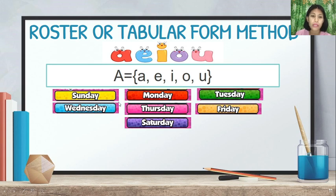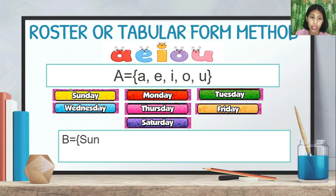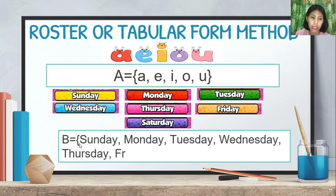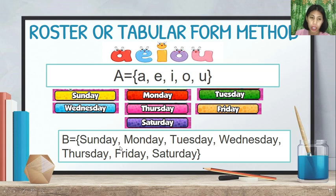For the days of the week, we name this as Set B. In roster form, we write: B = {Sunday, Monday, Tuesday, Wednesday, Thursday, Friday, Saturday}, with commas in between.